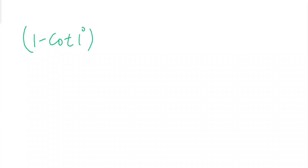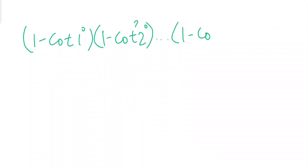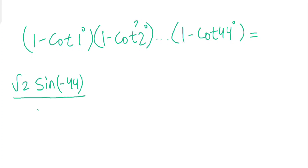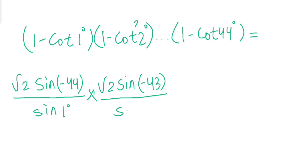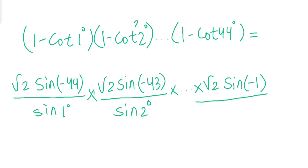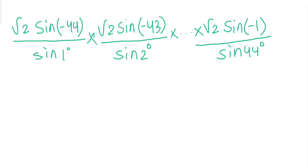Multiplying all these terms: (1 - cot 1°)·(1 - cot 2°)···(1 - cot 44°) equals [√2·sin(-44°)/sin 1°] · [√2·sin(-43°)/sin 2°] · all the way up to [√2·sin(-1°)/sin 44°]. Now, since sin(-θ) = -sin θ...